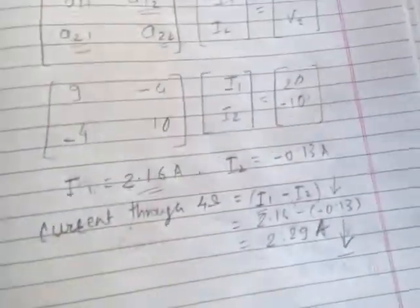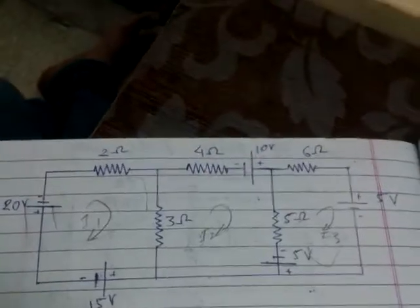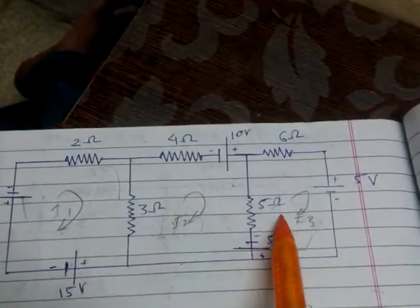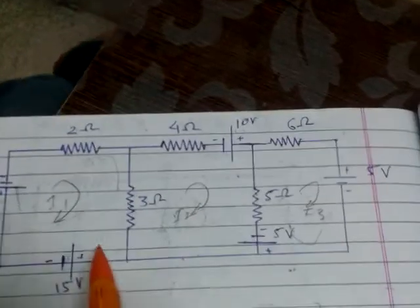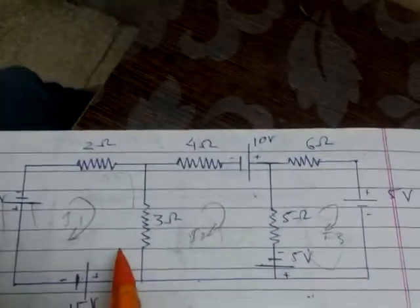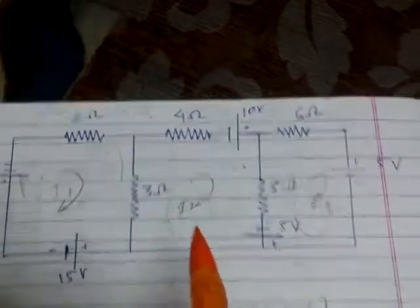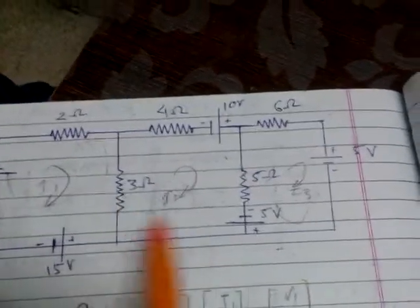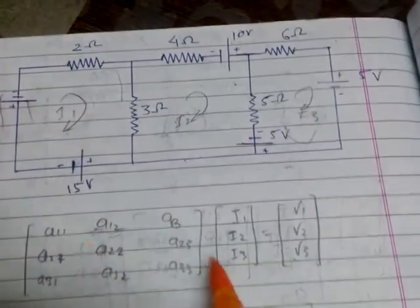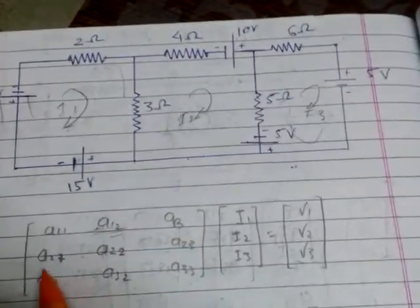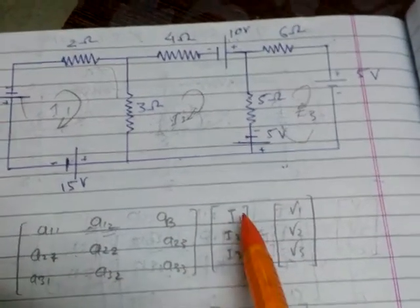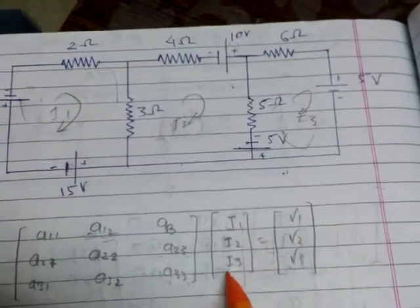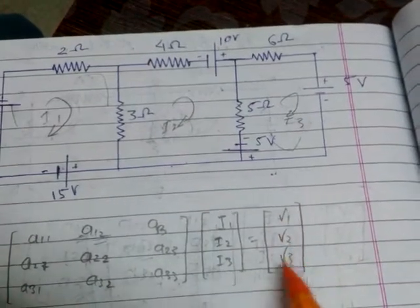Now for a circuit with three loops I1, I2, and I3, as drawn earlier: for a two-loop circuit we used a square matrix of order 2; for three loops we use a square matrix of order 3. The matrix positions are a11, a12, a13, a21, a22, a23, a31, a32, a33, with currents I1, I2, I3 and voltages V1, V2, V3.